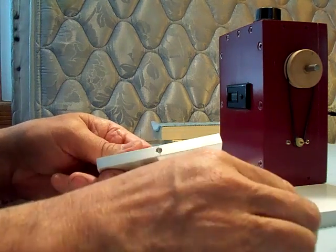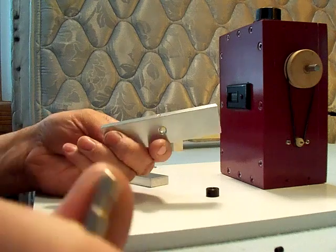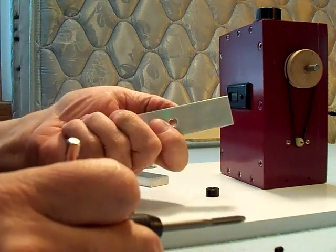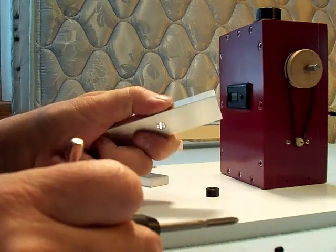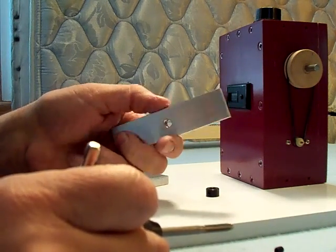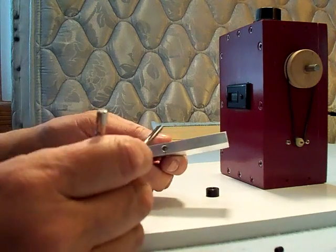So I got the hole drilled in the side and I took the countersink and just hit the edge of the hole with the countersink just to make it smooth and deburred and ran some sandpaper over it. Makes it nice and smooth.